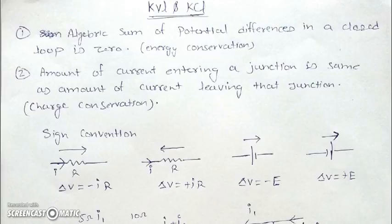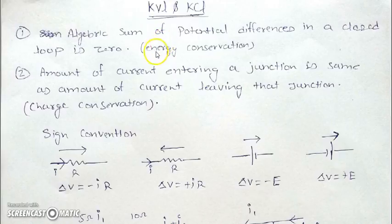Hello students, in this video we'll be talking about KVL and KCL — Kirchhoff's voltage law and Kirchhoff's current law. Let's start with KVL. According to Kirchhoff's voltage law, the algebraic sum of potential differences in a closed loop is zero. This is a consequence of energy conservation.